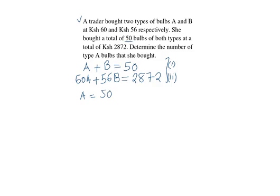Then we substitute the value of A in equation 2. We'll have 60 multiplied by 50 minus B plus 56B is equals to 2,872.